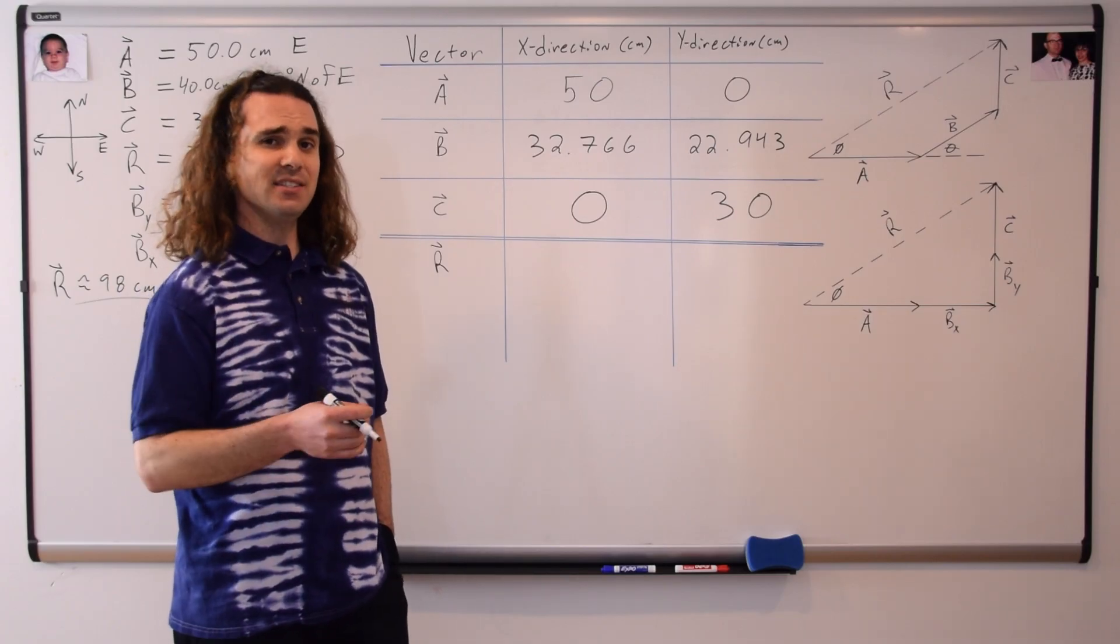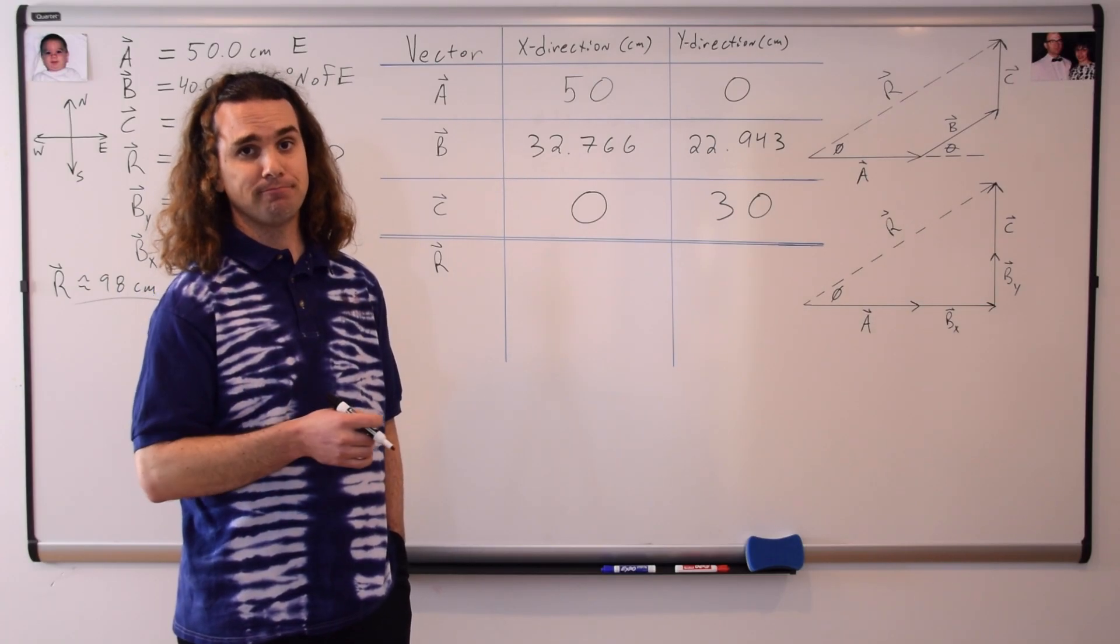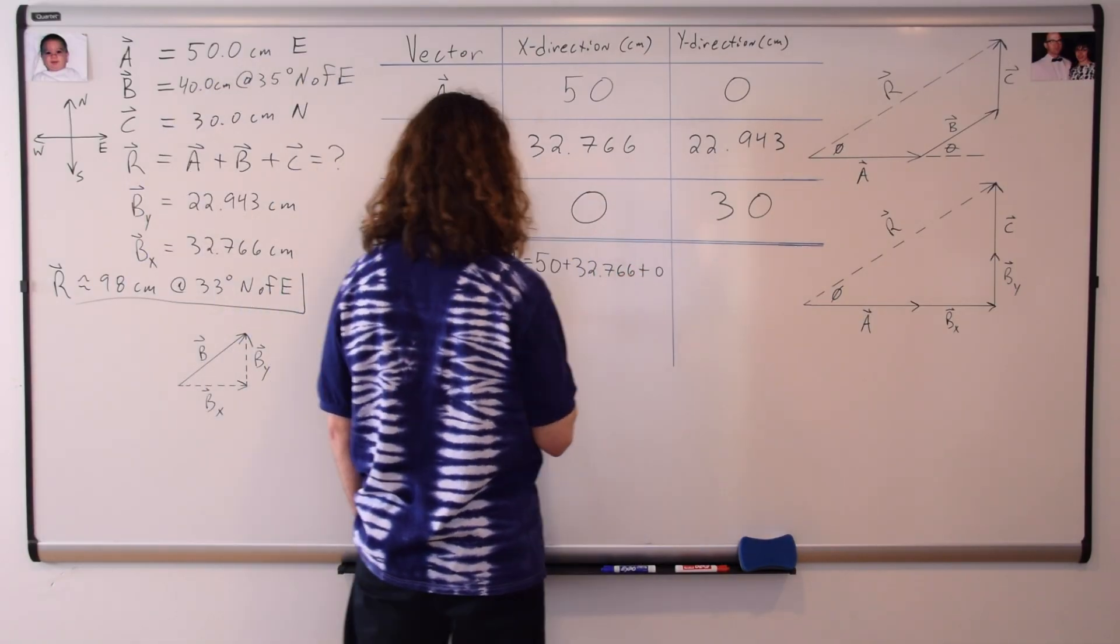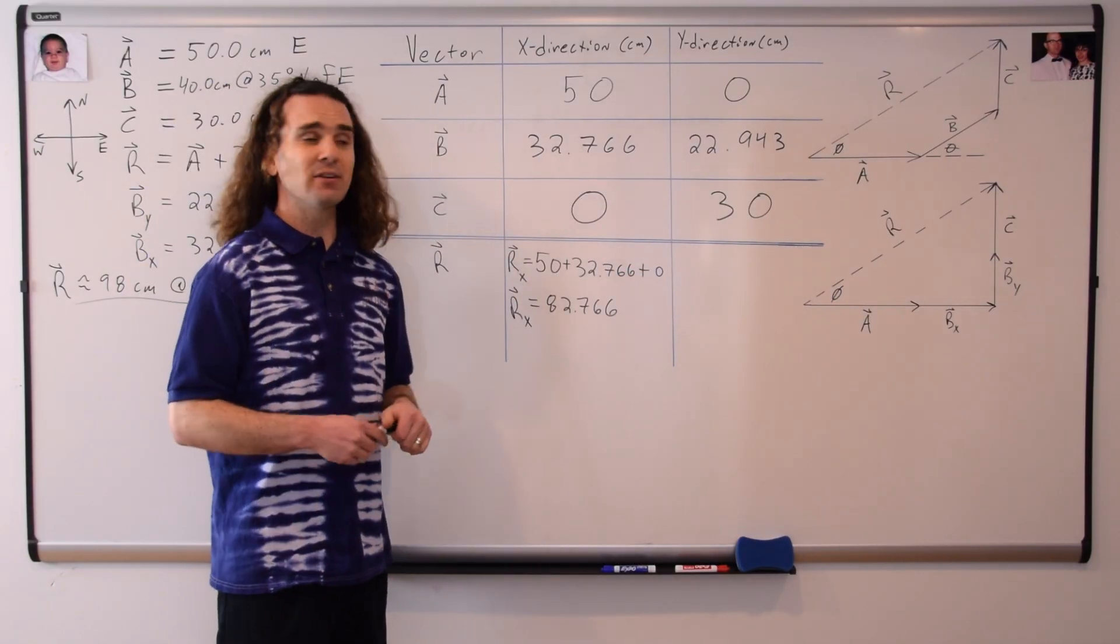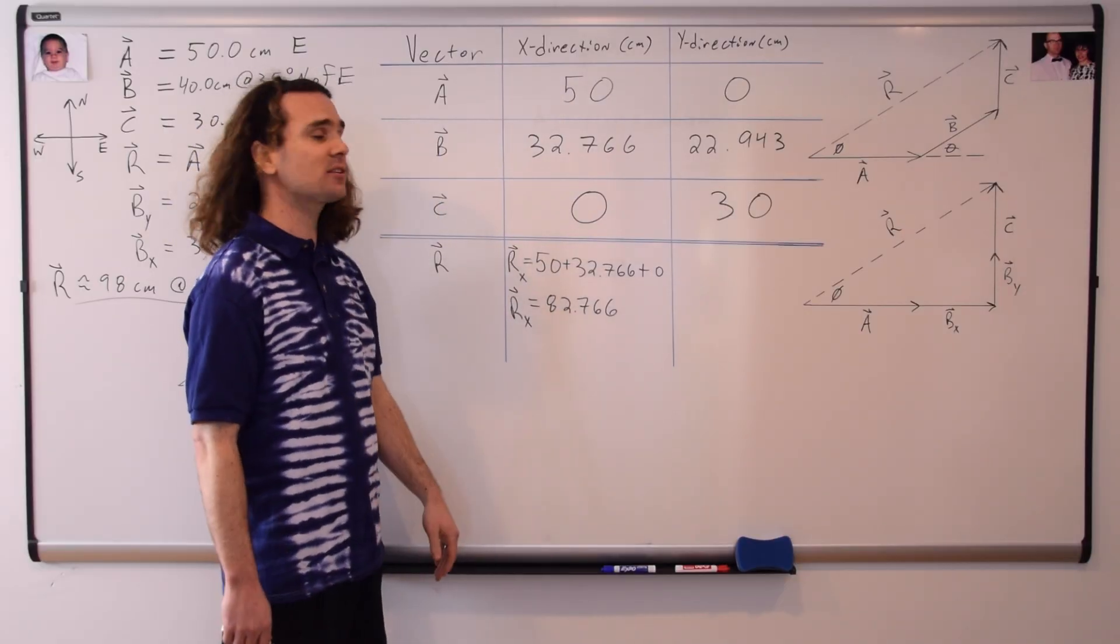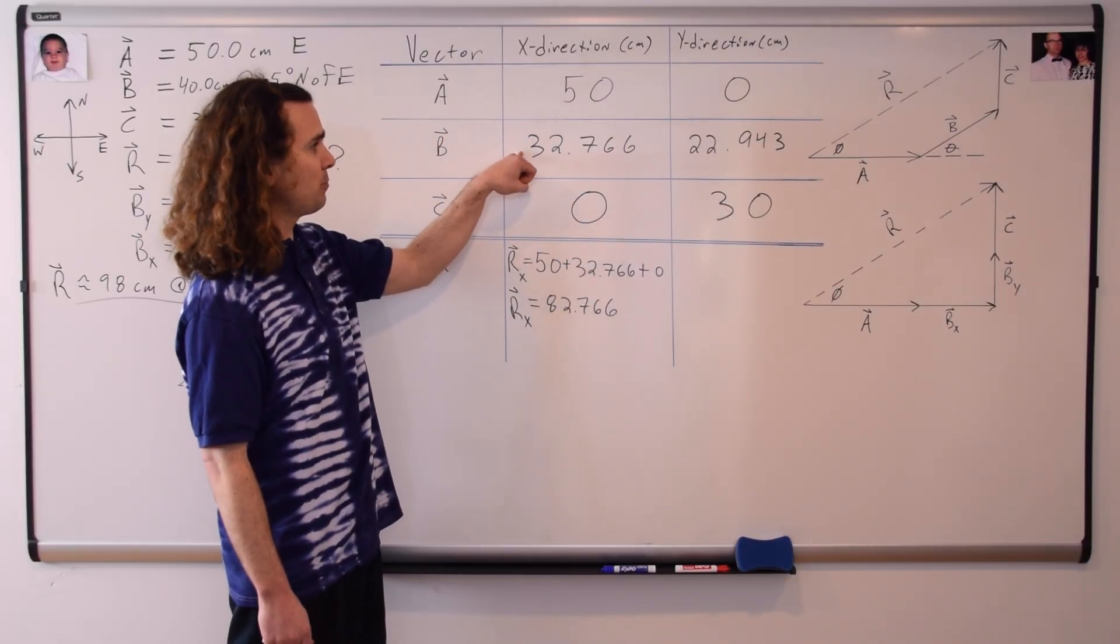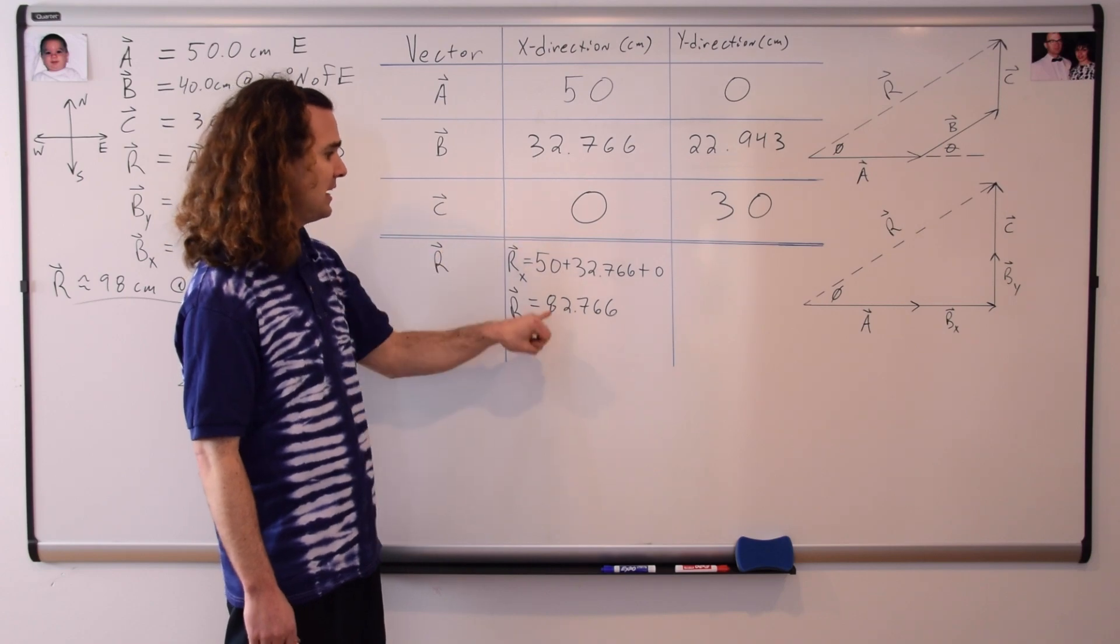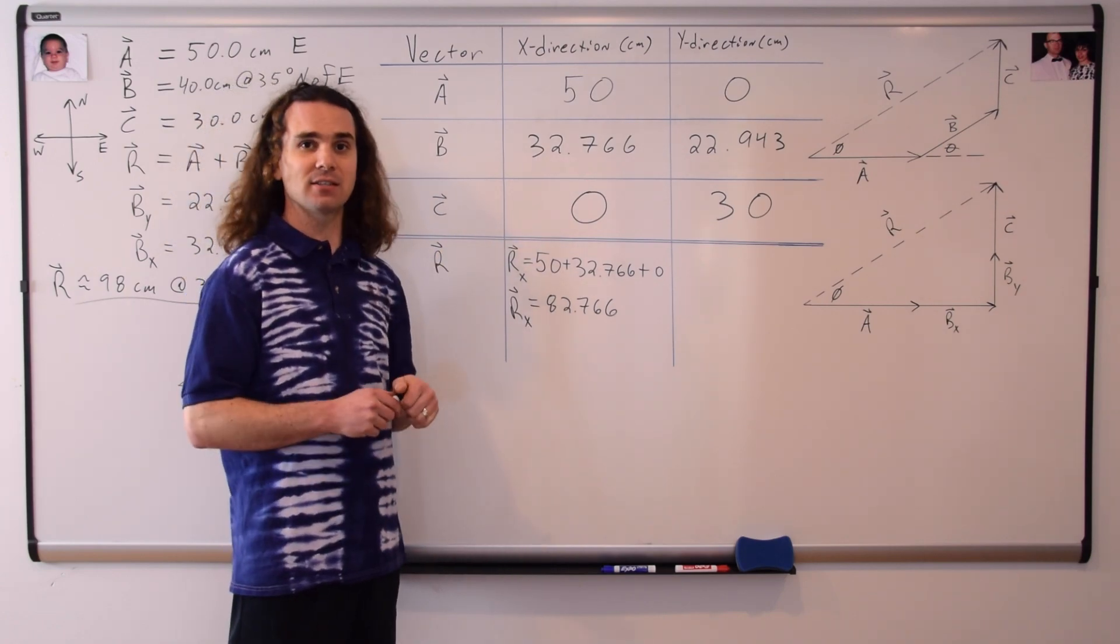Notice how easy this makes it to find the components of our resultant vector. The resultant vector in the x-direction is just the summation of all the components in the x-direction. You just add everything in this column. 50 plus 32.766 plus zero is 82.766 centimeters.